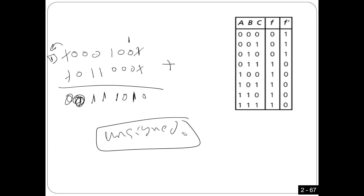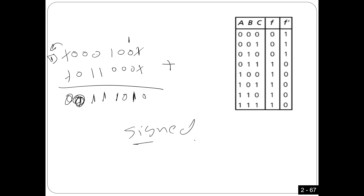If these numbers are signed, is there an overflow? Very simple rule: if you add positive to positive and get a negative number, or add negative to negative and get a positive number — those are the two cases that indicate signed overflow. Here, both numbers are negative. But the result is zero, which is positive. I added negative numbers and got positive — for sure something is wrong because of overflow. So there is overflow in both the signed and unsigned cases.